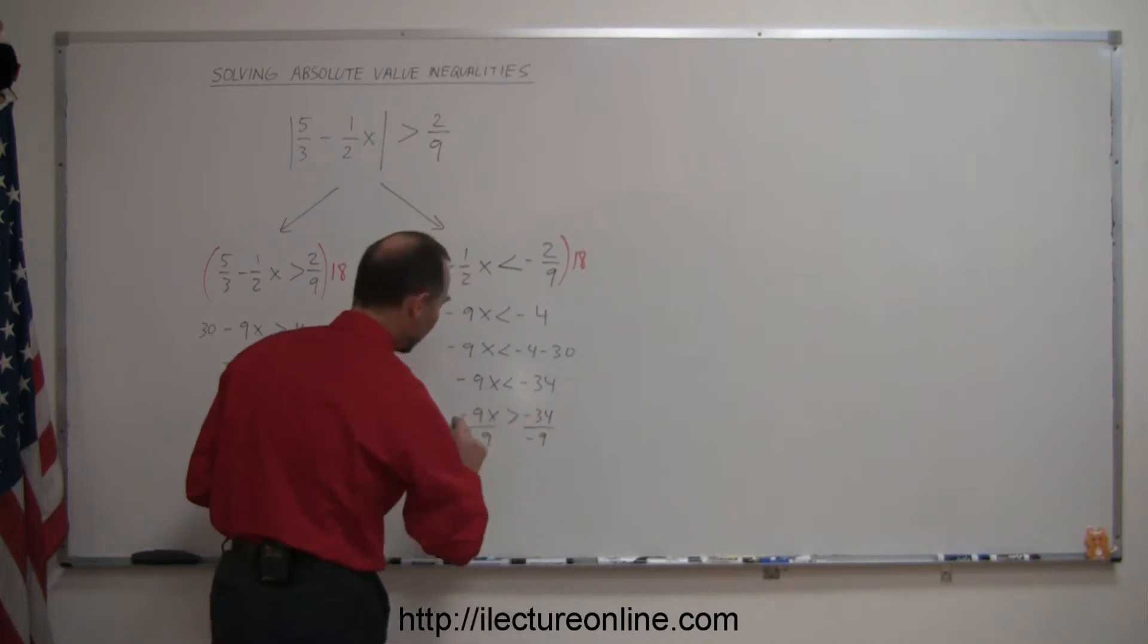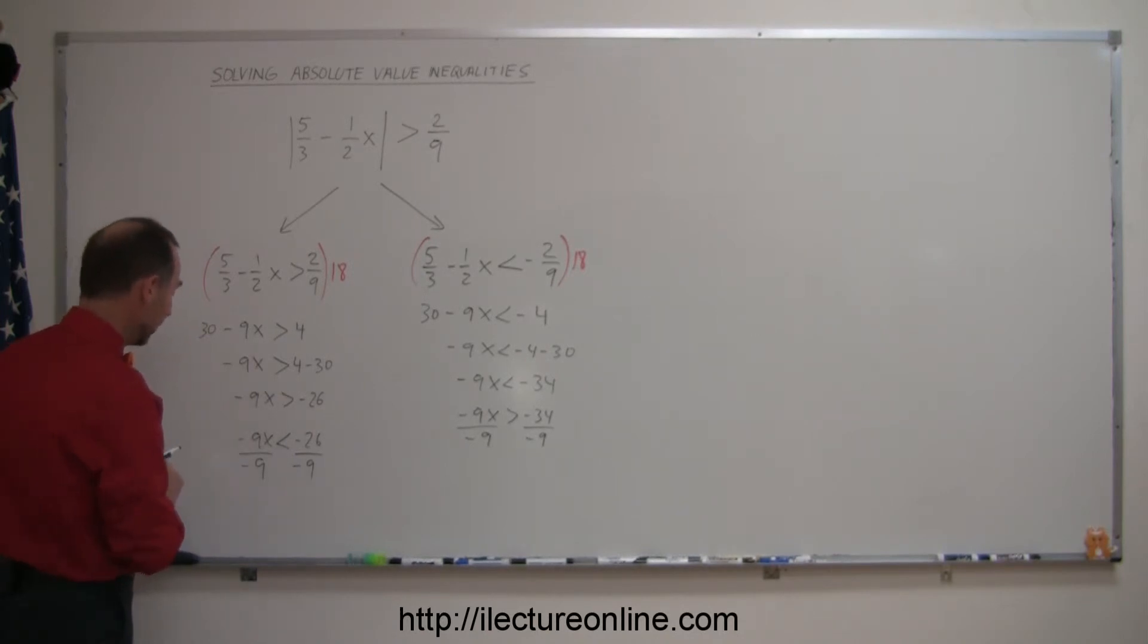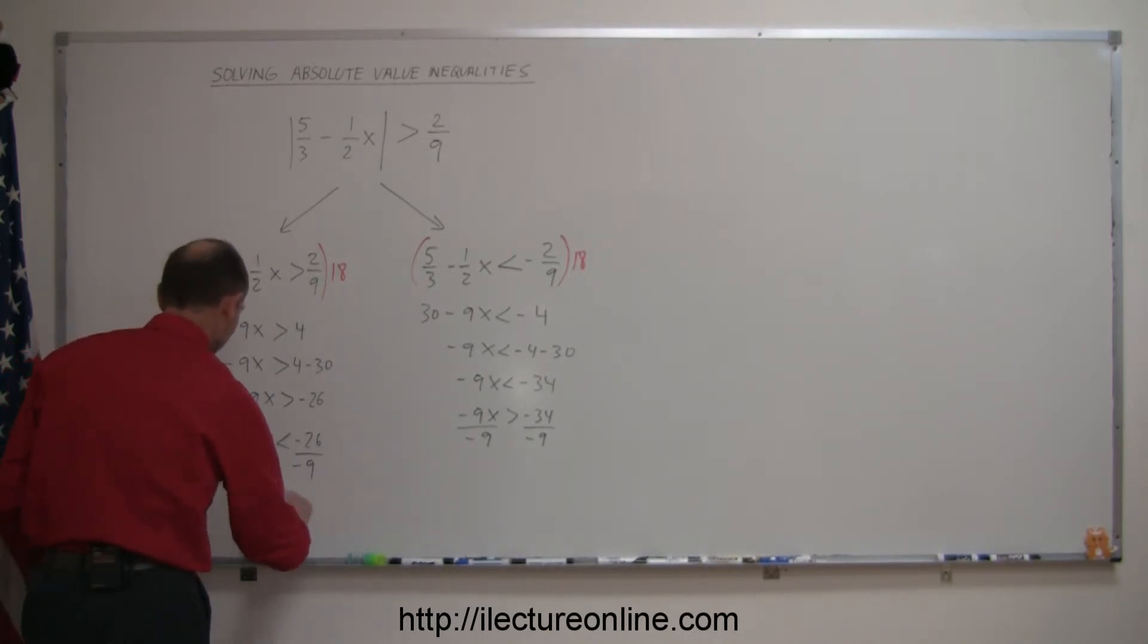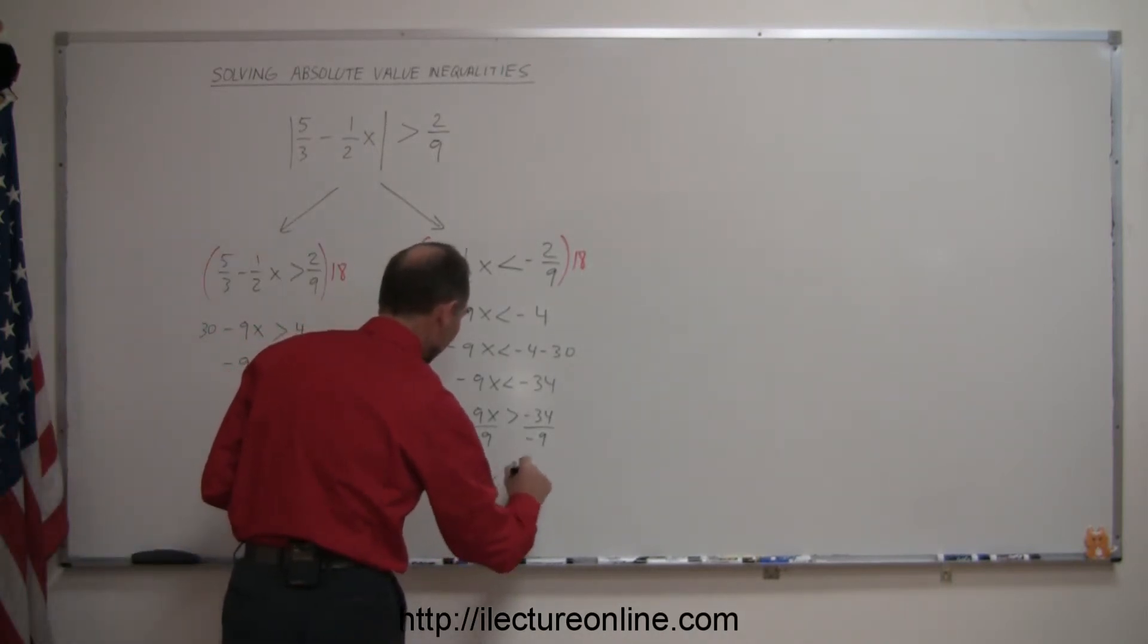So always remember when you divide by a negative number or multiply both sides of the inequality by a negative number, you must turn the inequality symbol around. So here we get x is less than 26/9, and here we get x is greater than 34/9.